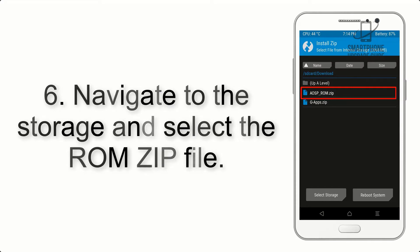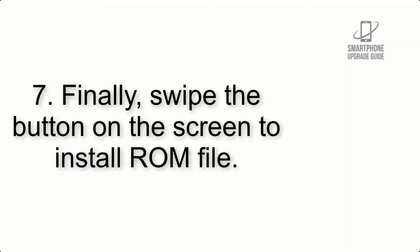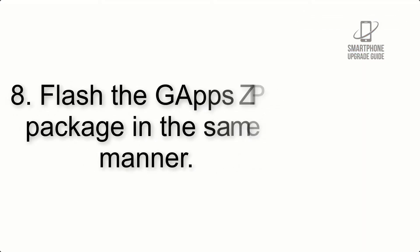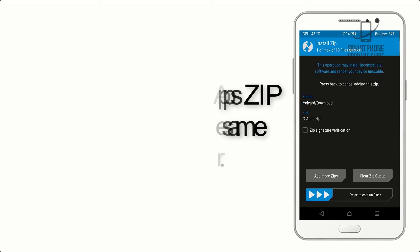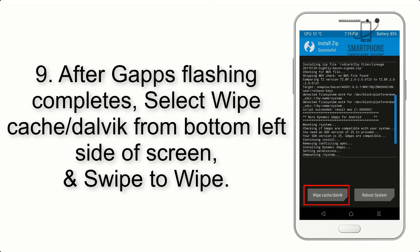Step 5: Go back to the recovery main screen and tap on the Install button. Step 6: Navigate to the storage and select the ROM zip file. Step 7: Finally, swipe the button on the screen to install the ROM file. Step 8: Flash the GApps zip package in the same manner.